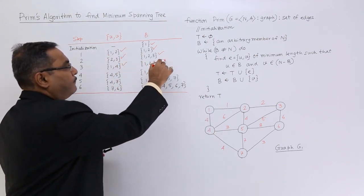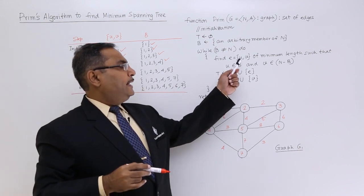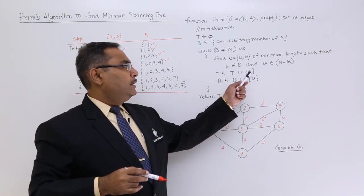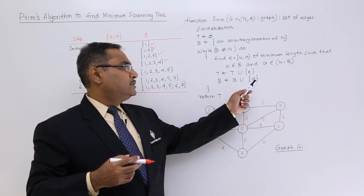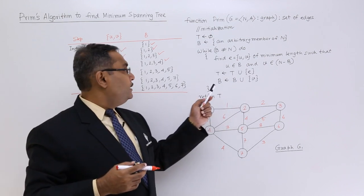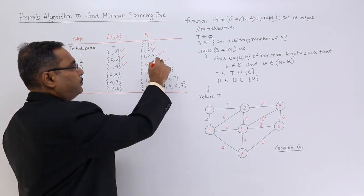Edge 1-4 has been taken and 4 has been union. You are taking this 1-4. This particular edge will be union with the solution t, and this 4 will be union with b. That is why 4 has come here. 4 is the new node.